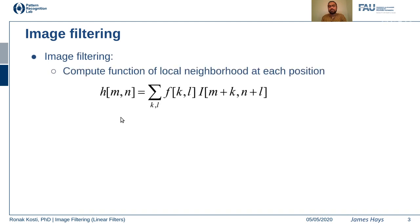You might have also heard about Instagram filters or filters used in software like Photoshop. These are also considered filters, specifically in the domain of image filters because they operate at the image level. The formal definition of image filtering: you have a filter of size k×l and an image of size m×n. You perform an operation over a neighborhood of the image, calculate values over that neighborhood, and this computation is called filtering. You do this for every location across the image and generate a new image.